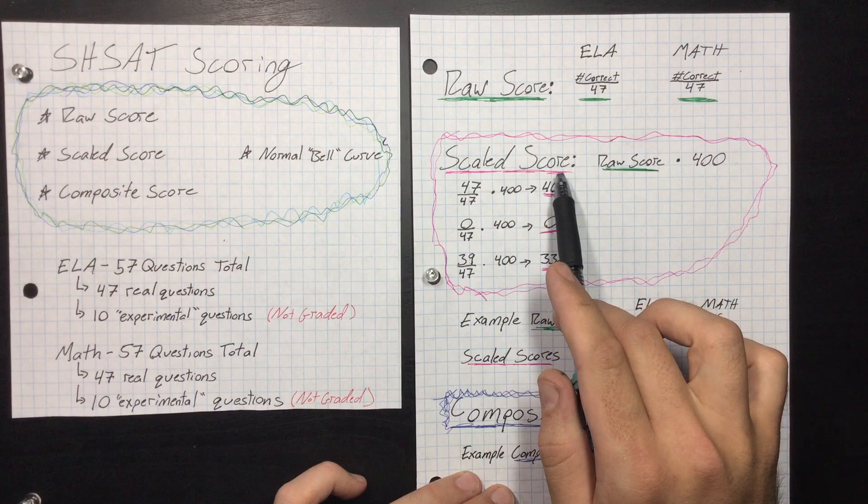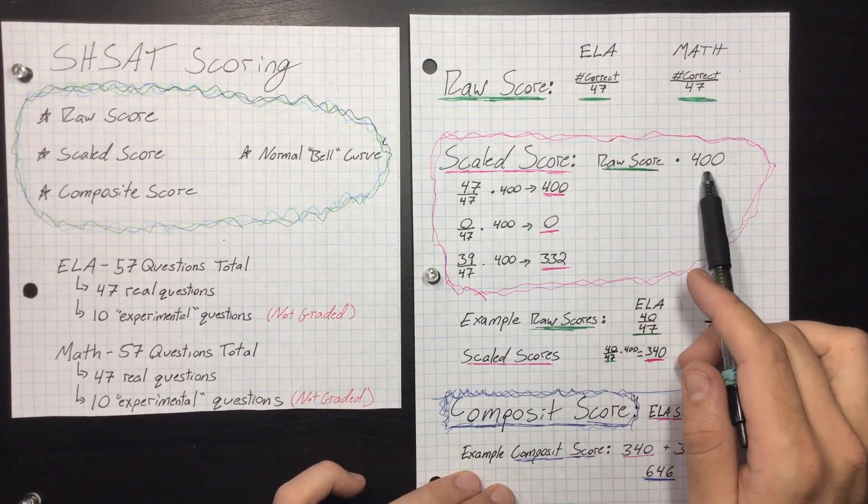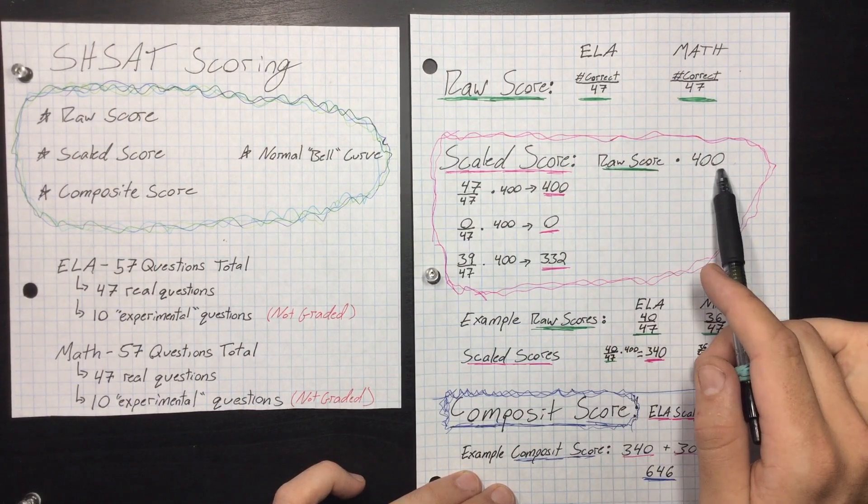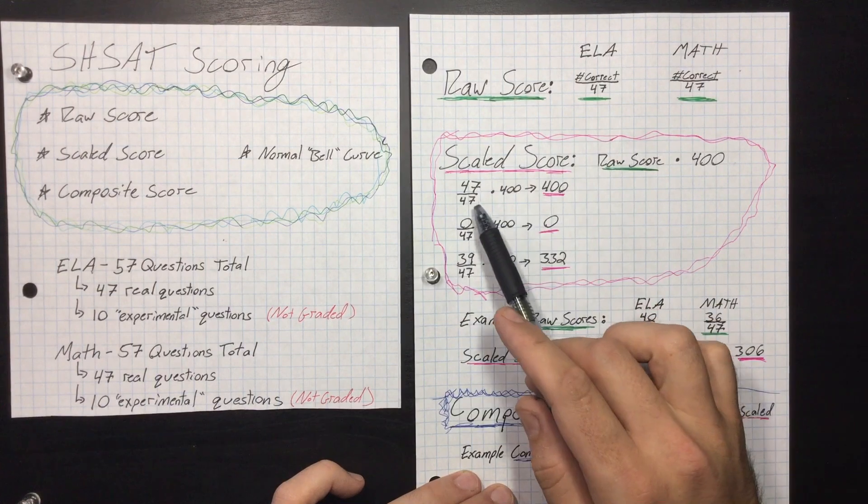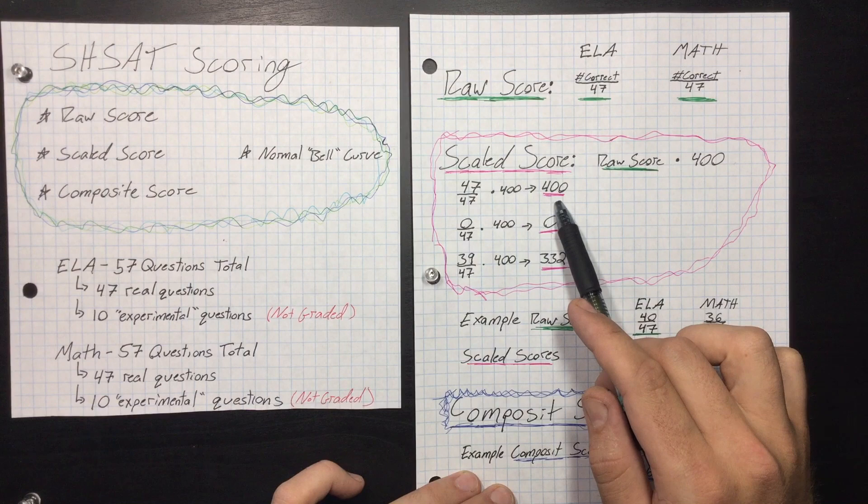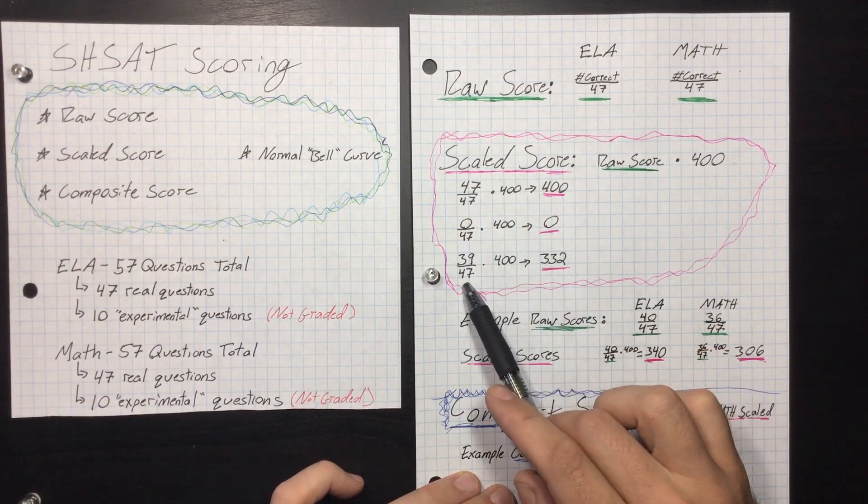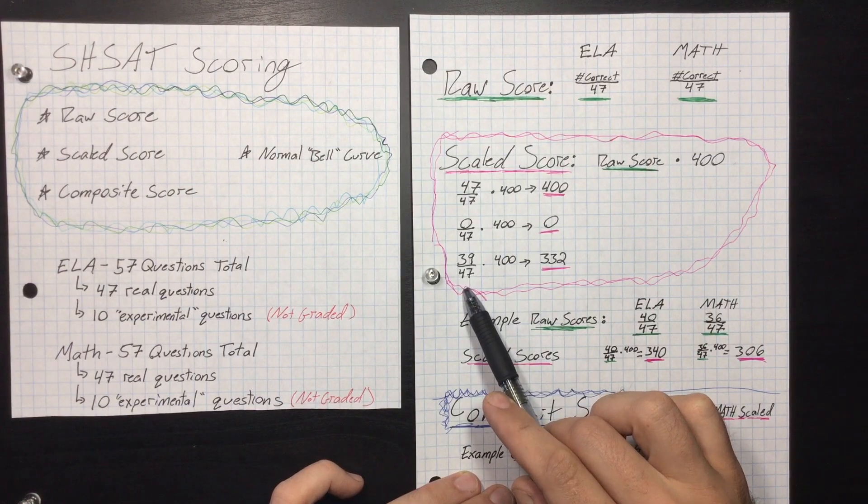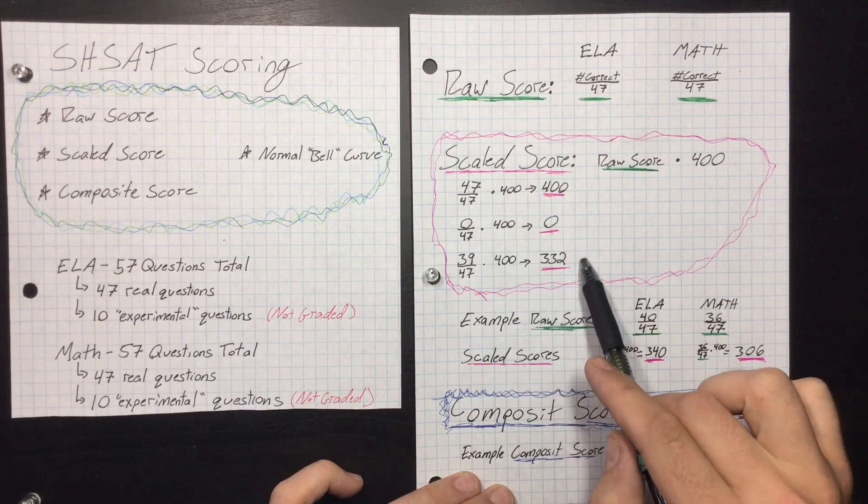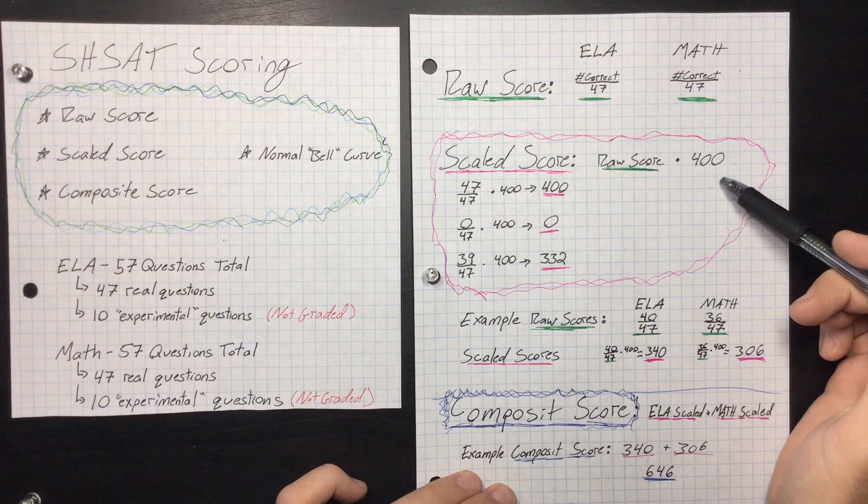Then there's the scaled score, and this is where you get it out of 800. For each section, it's out of 400. So you take the raw score and you multiply it by 400. So let's say in the ELA section you got a 47 out of 47, multiply that by 400, you get a 400 for the section. If you got a zero out of 47 for the ELA, you're going to get a zero. Likewise, if you got 39 questions correct, your scaled score for the ELA section would be 332. The scaled score is out of 400, remember.